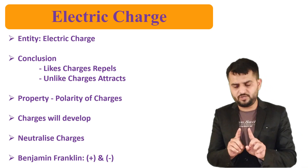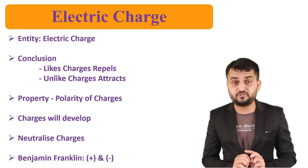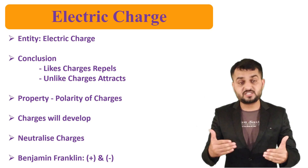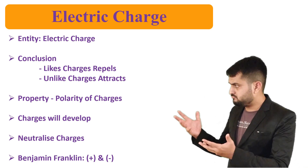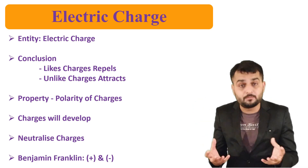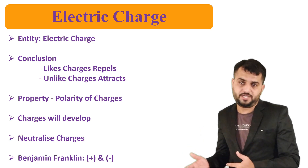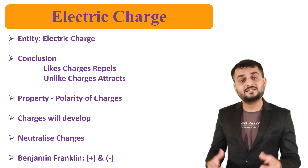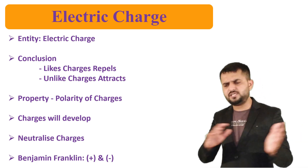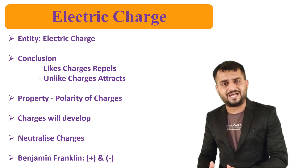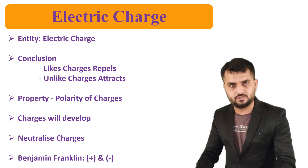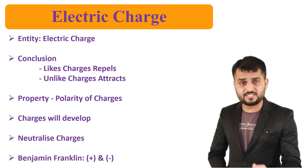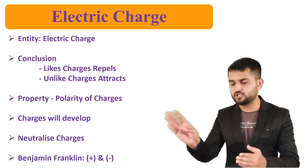The property differentiating both types of charges is called polarity of charges. Later on, it was found that charges are not born — they are developed. You can neutralize charges and you can develop charges. After years following the discovery, Benjamin Franklin named the two types of charges: positive and negative.